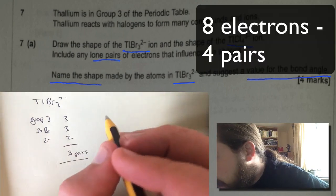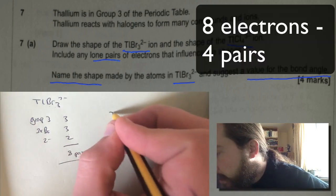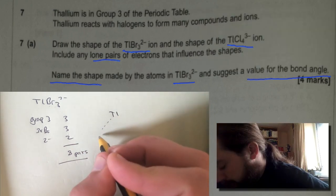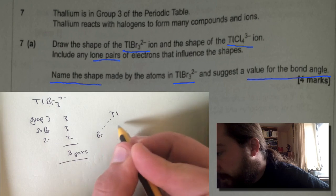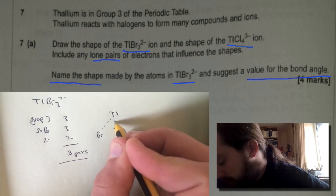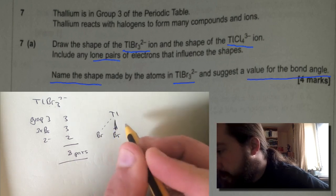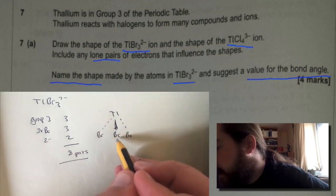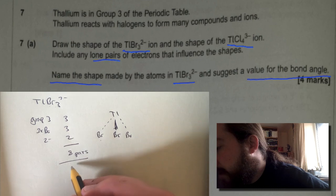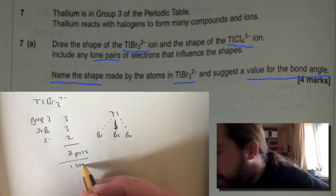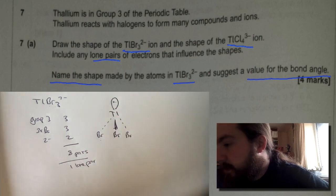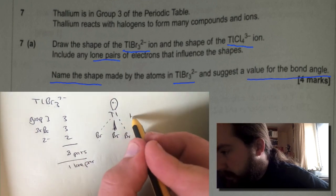Okay and 8 pairs means it's going to be a trigonal pyramidal molecule. So we'll draw that one with a Tl in the middle. We've got our 3 bromide coming off it and then that's 2, 4, 6 electrons we've accounted for so we're going to have 1 lone pair which we'll draw coming out the top.